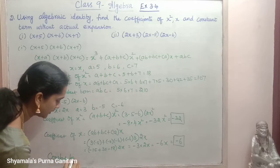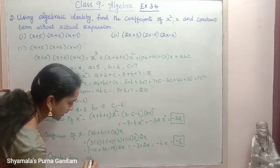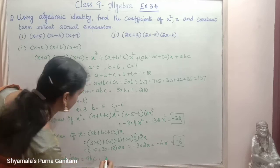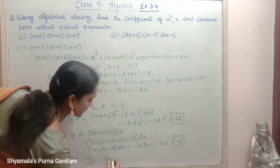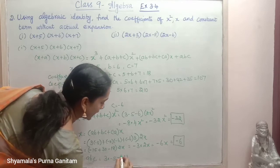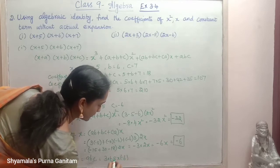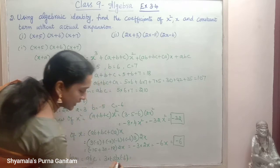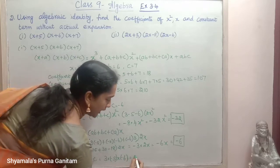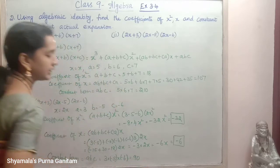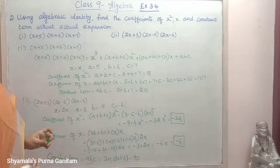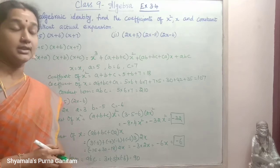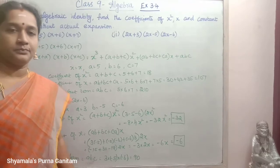Constant term is abc. a is 3, b is −5, c is −6. 5×6 is 30, 30×3 is 90. So 90 is the constant term.